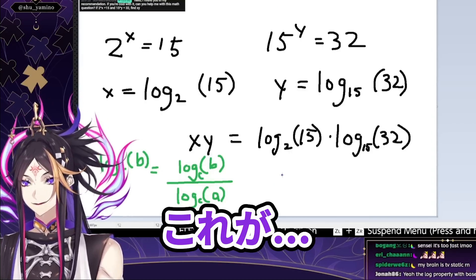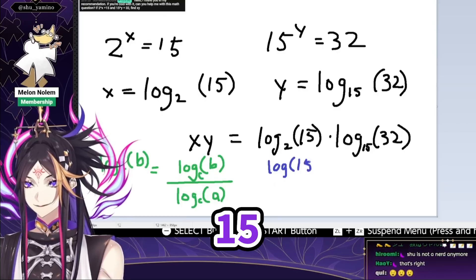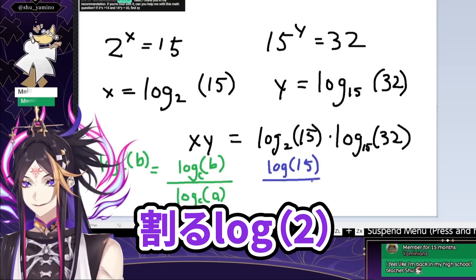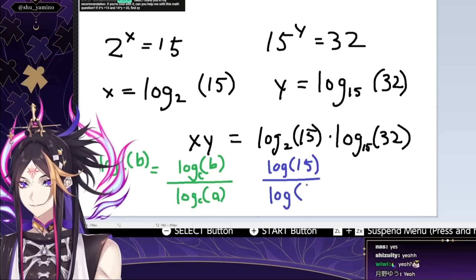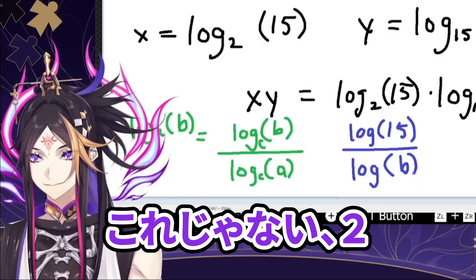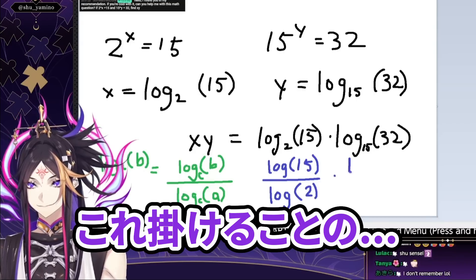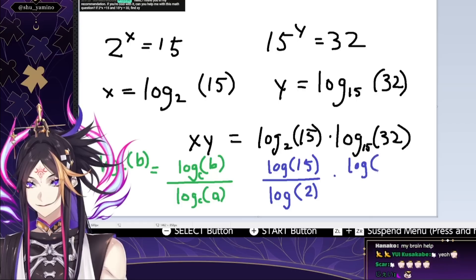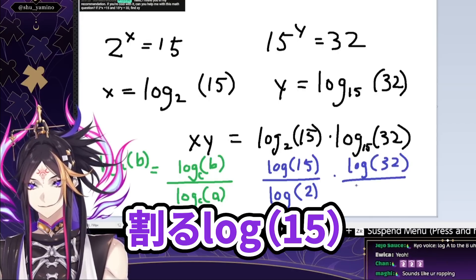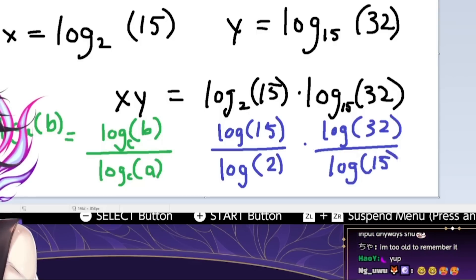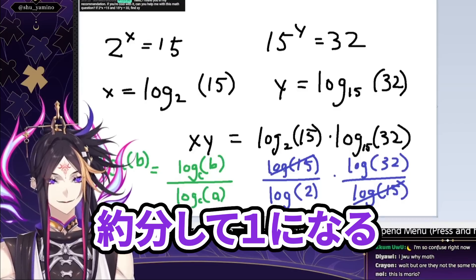So then this becomes log 15 over log 2 — it could be any base, whatever you want. And then this becomes times log 32 over log 15. And then these cancel out when you multiply — they simplify to 1.